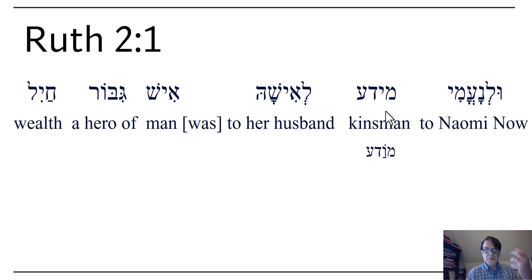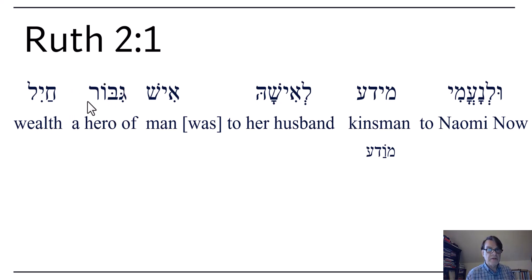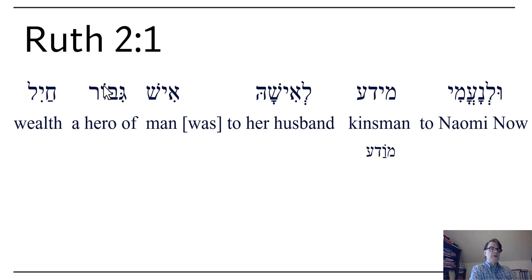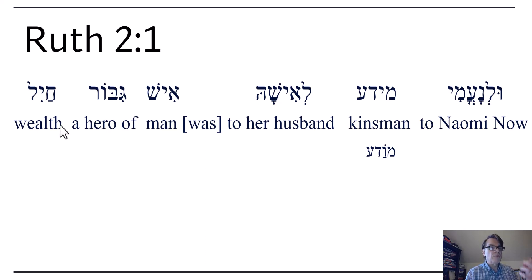So now to Naomi, there was a kinsman to her husband, a man who was a hero of wealth — of kayil. I'm taking this to be a construct. This is a historically long vowel, it's not going anywhere. The context is leading me to think an 'of' — a hero of wealth.